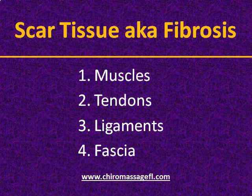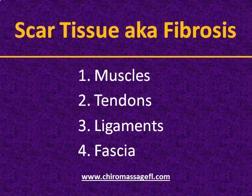The word that health professionals use to describe scars is fibrosis. As you can see, scar tissue, or fibrosis, can form in any tissue of the body. Scar tissue has four basic causes. The first is trauma, where something hits you or you hit something else. Repetitive motion is where you do something over and over again with a part of the body. This is experienced by typists, athletes, and students — in fact, most of us do something over and over again, and this causes scar tissue to form.